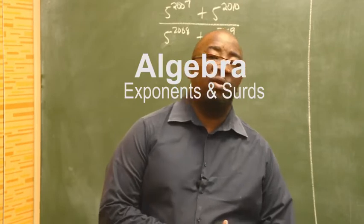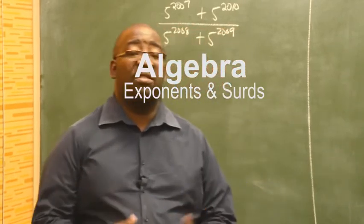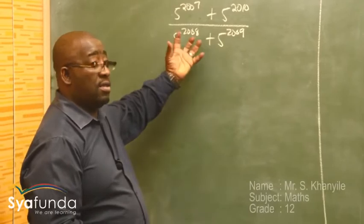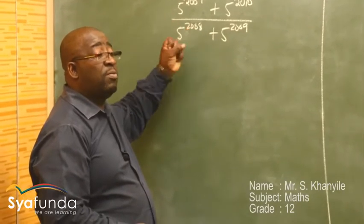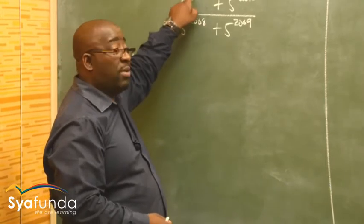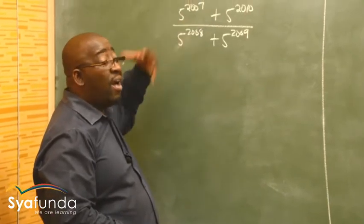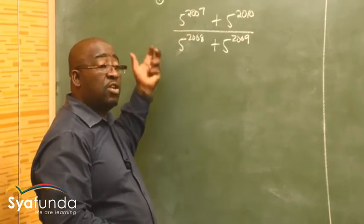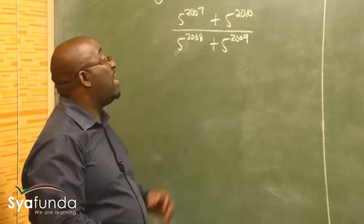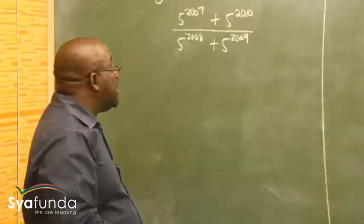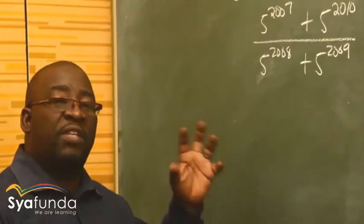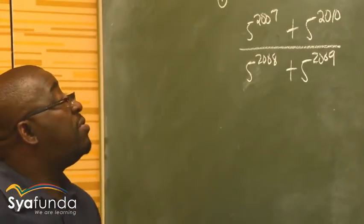We move on to this next topic called exponents and surds. At times you cannot differentiate this one — others will refer to this type of problem as part of exponents, because it is in an exponential form. Others will call this the previous topic, which is non-routine problems or problem solving. So it can fit in both places. Let's start with this one, because we've just finished the non-routine problems.